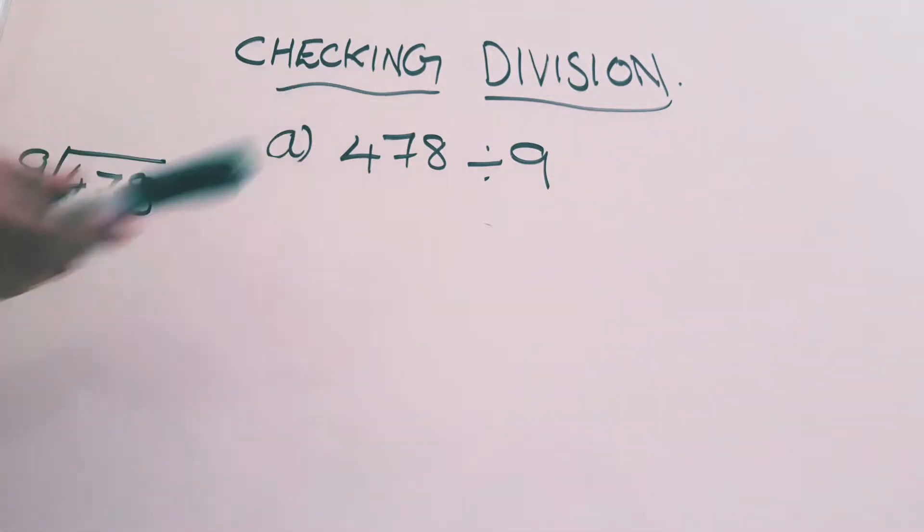First question is 478 divided by 9. Dividend is 478. Divisor is 9. Let's begin.